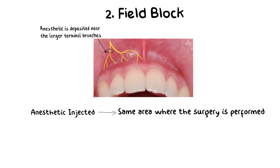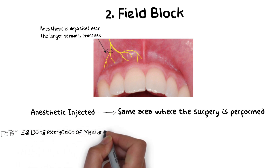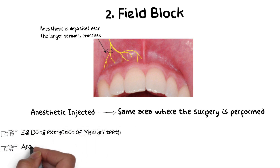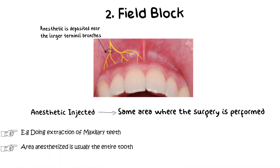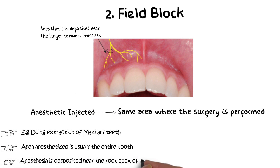The field block is mostly used when working on maxillary teeth and mandibular anteriors — either extracting them or doing other procedures. The local anesthetic is deposited at or above the apex of the tooth, blocking transmission from the tooth to the CNS. For example, to extract a maxillary central incisor, the anesthetic is injected near its root apex, blocking the entire field. Therefore, extractions can be performed with a field block but not with local infiltration.